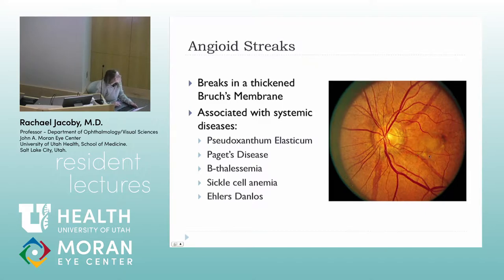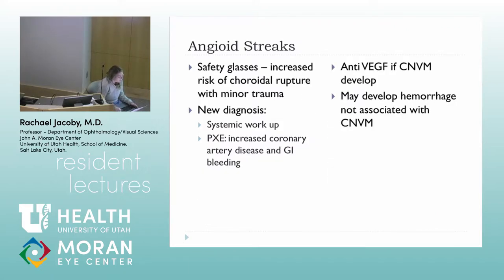This choroidal neovascular membrane is coming off a break in Bruch's membrane and you can see the associated edema. Regarding systemic workup, patients have increased risk of coronary artery disease, coronary artery sclerosis, and GI bleeding. It's also important to recommend safety glasses because they have a very high risk of choroidal rupture with even very minor trauma to the eye.